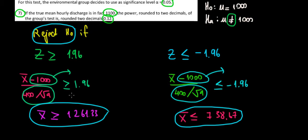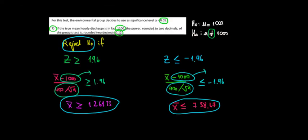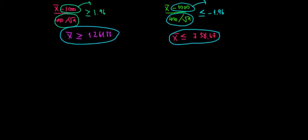Let's finish off the question in this video. We want to find out the power of this test, meaning we want to find out what is the probability of rejecting the null hypothesis given that the true mean is going to be 1100 liters. Let's zoom out and make some space. What is the probability of rejecting the null hypothesis given that the true mean is equal to 1100 liters?